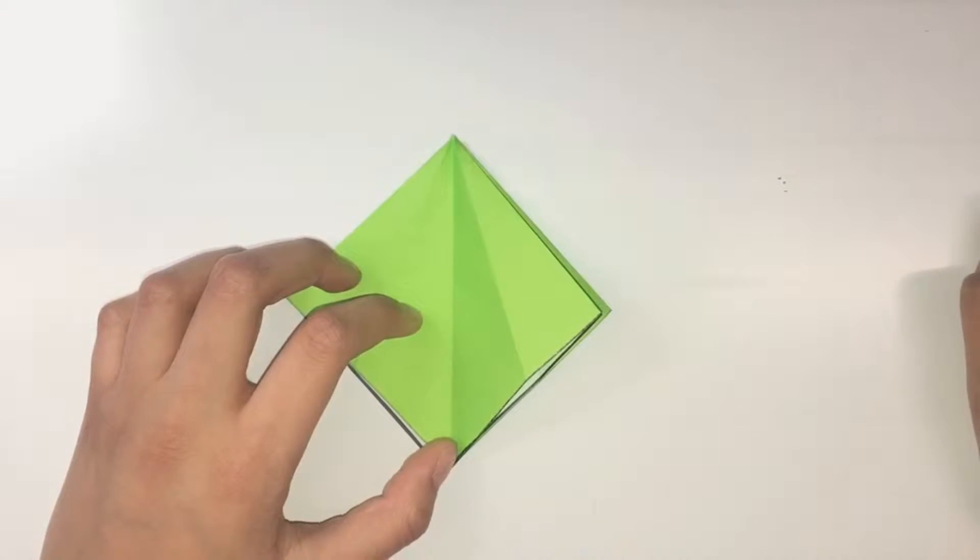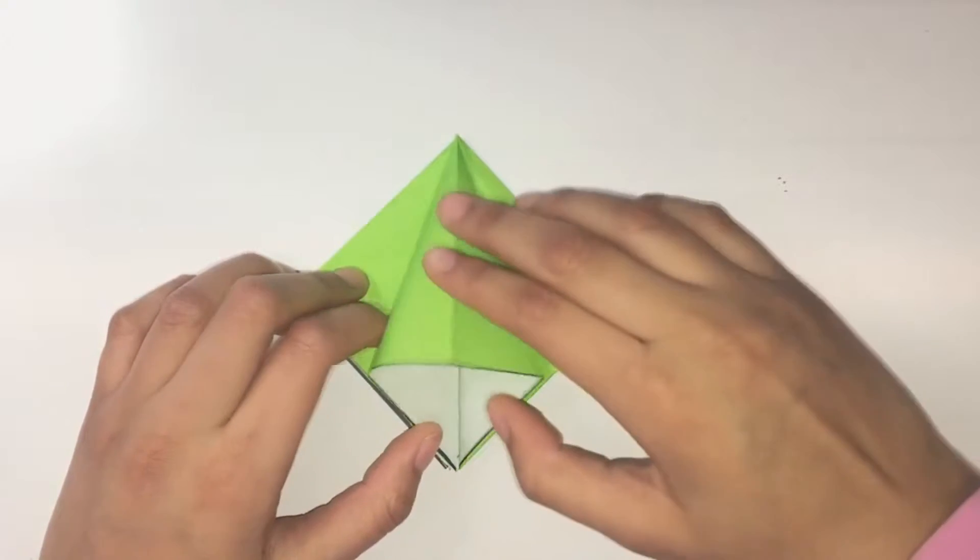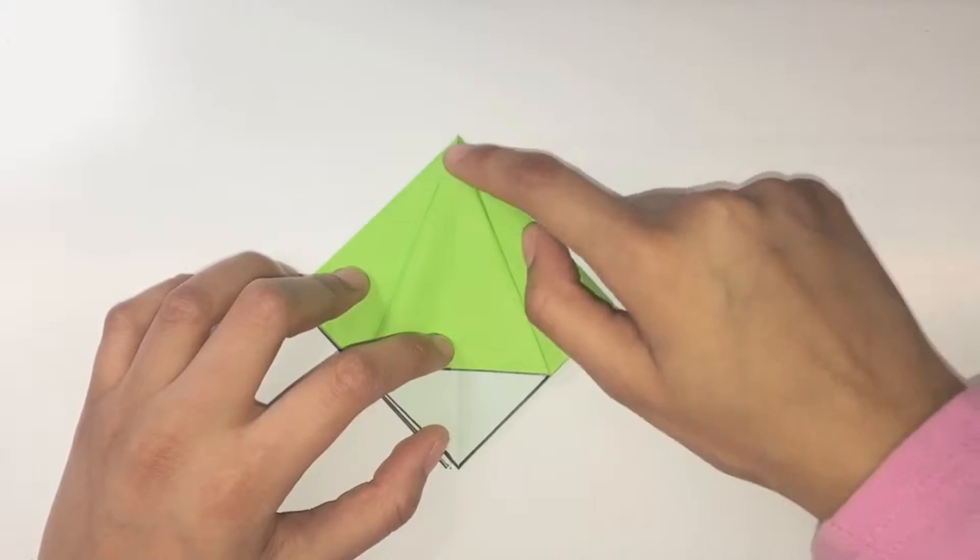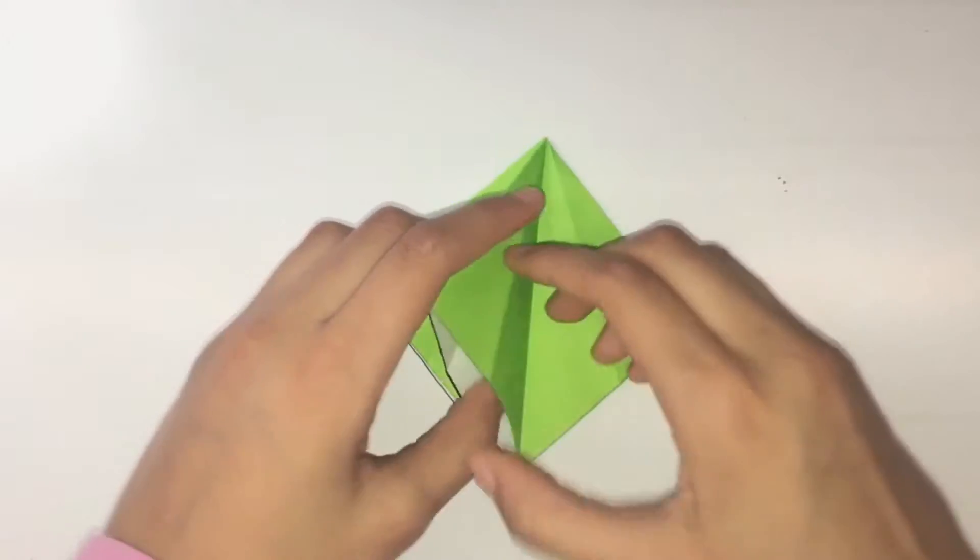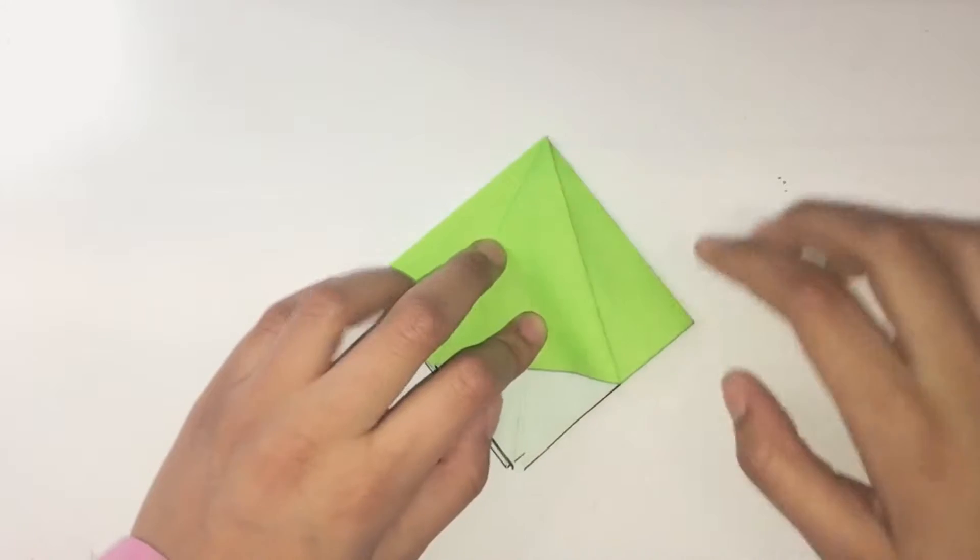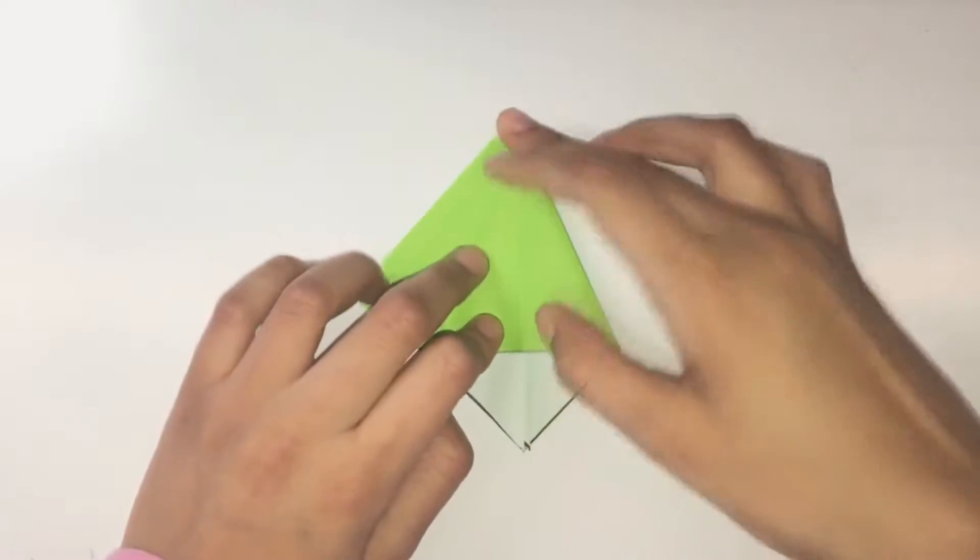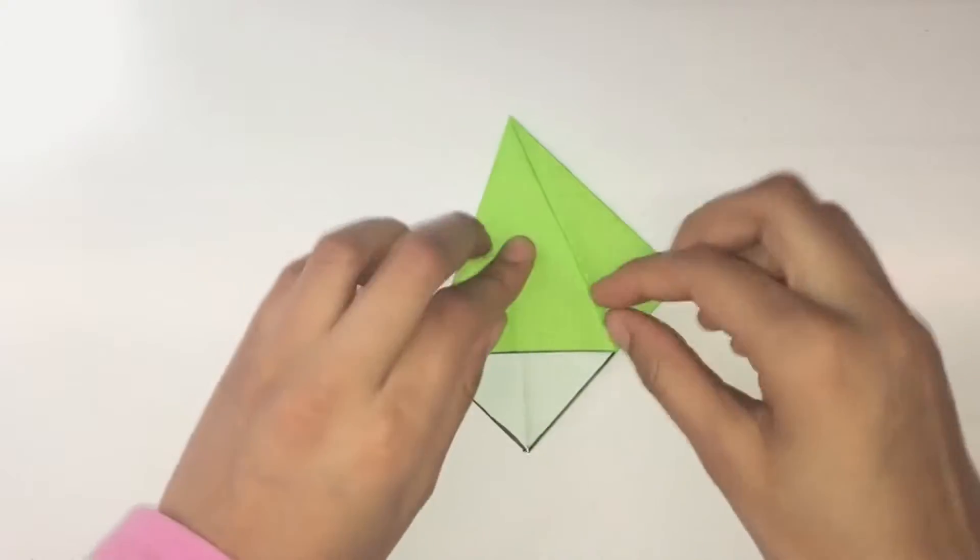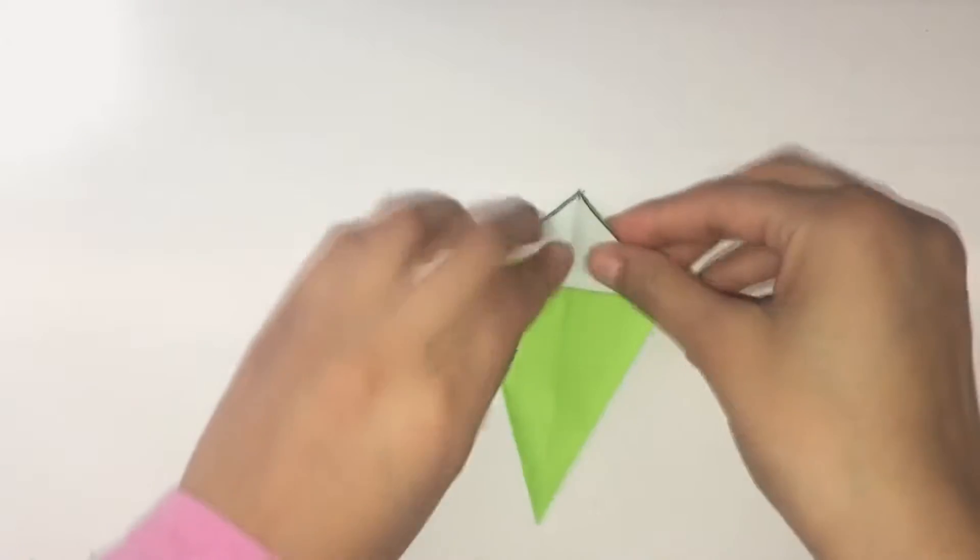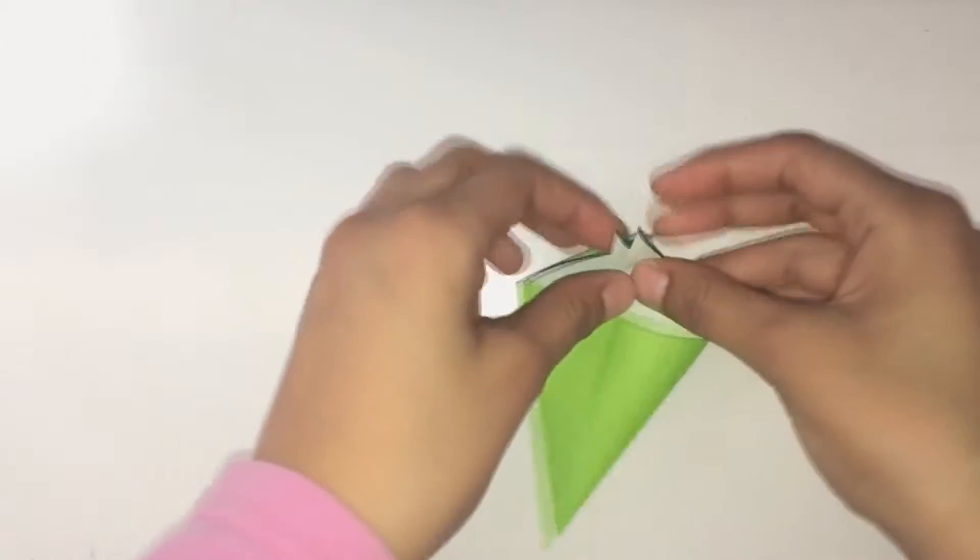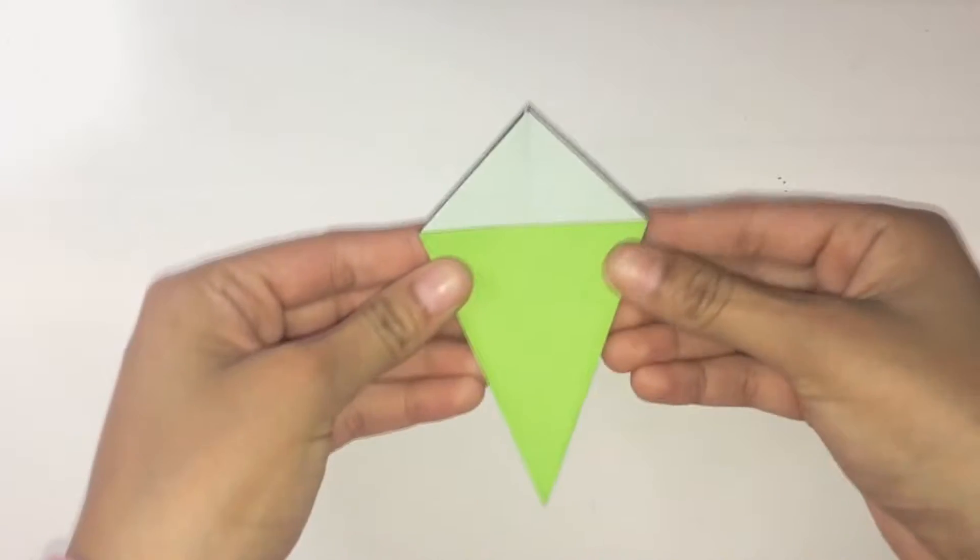Now we are going to create a series of squash folds. What you want to do is just lift up a flap and then push it down so the center line aligns with the paper. Turn over to the back and do the same thing. Then you want to flip this over like a page in a book and do it again. Same thing for the back. It should look something like an ice cream cone.